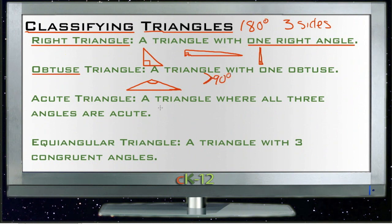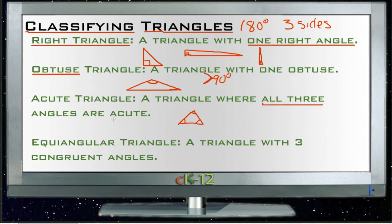An acute triangle is the opposite. There are still two angles that are already acute, but with an acute triangle all three angles are less than 90 degrees — maybe one is 75 degrees and the other two add up to 105, but all three angles need to be less than 90 degrees. In other words, all three angles are acute.